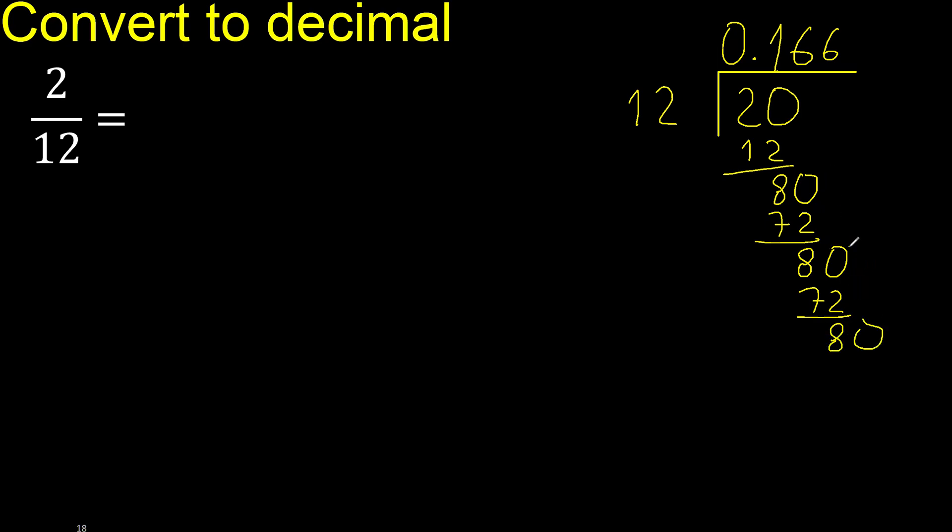This repeat, therefore repeat, therefore 6 repeat. After the point, 6 repeat, therefore like this, 6 repeat, finish it.